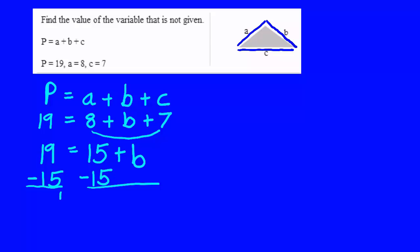Now on the left, 19 minus 15 is 4. On the right, 15 minus 15 is 0. And then bring down the plus B. And we know what 0 plus B is, right? So now we know that side B is 4 units long.